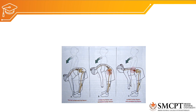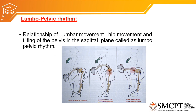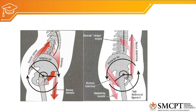Now let us discuss the lumbopelvic rhythm, which is an important topic. Lumbopelvic rhythm is the relationship of lumbar movement, hip movement, and tilting of the pelvis in the sagittal plane during forward and backward bending of the lumbar spine along with the hip joint. Regarding movement of the pelvic bone: if the pelvic bone tilts anteriorly it is called anterior pelvic tilt, and if it rotates posteriorly it is called posterior pelvic tilt.